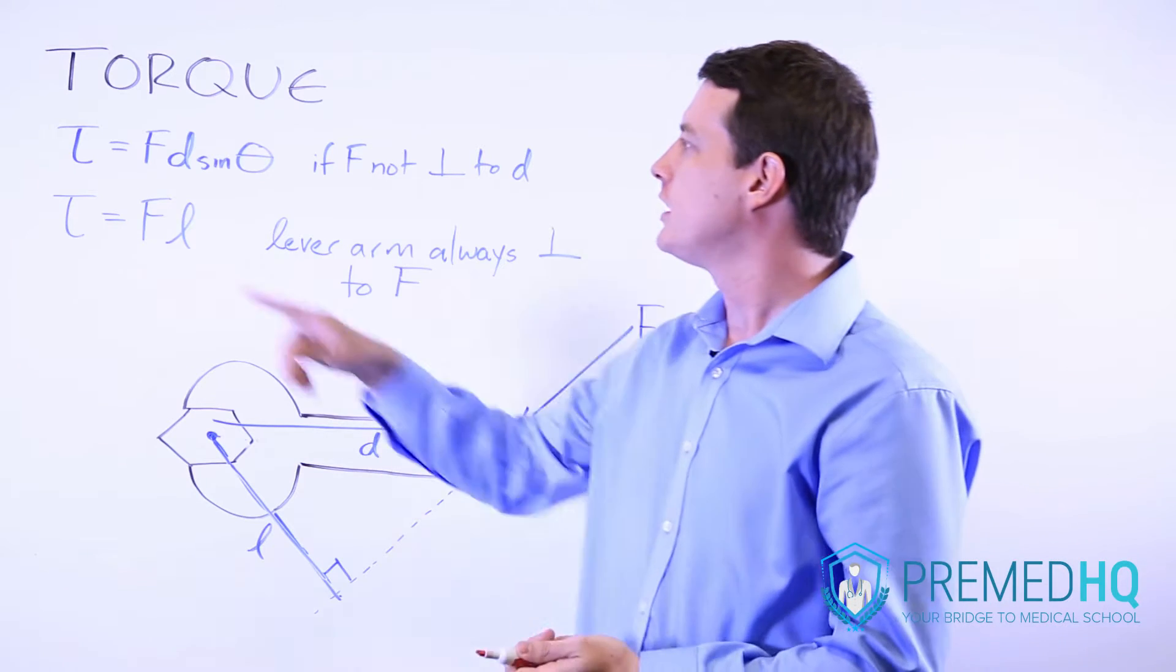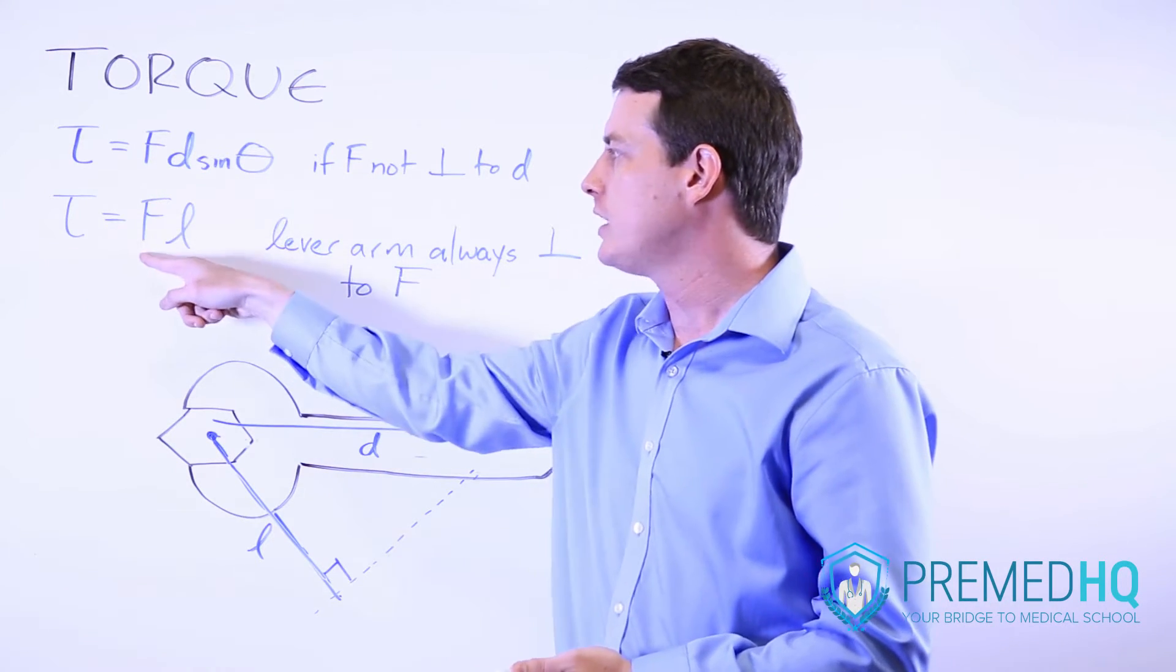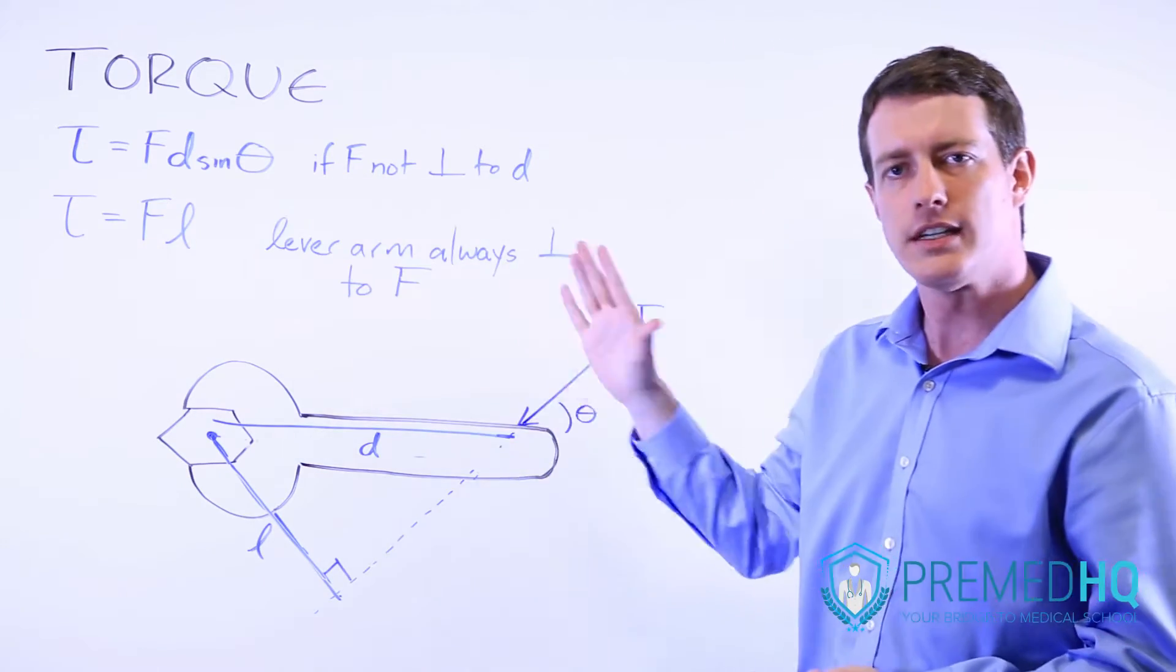One of them is torque equals Fd sin θ, and the other is torque equals FL, where L is the lever arm.